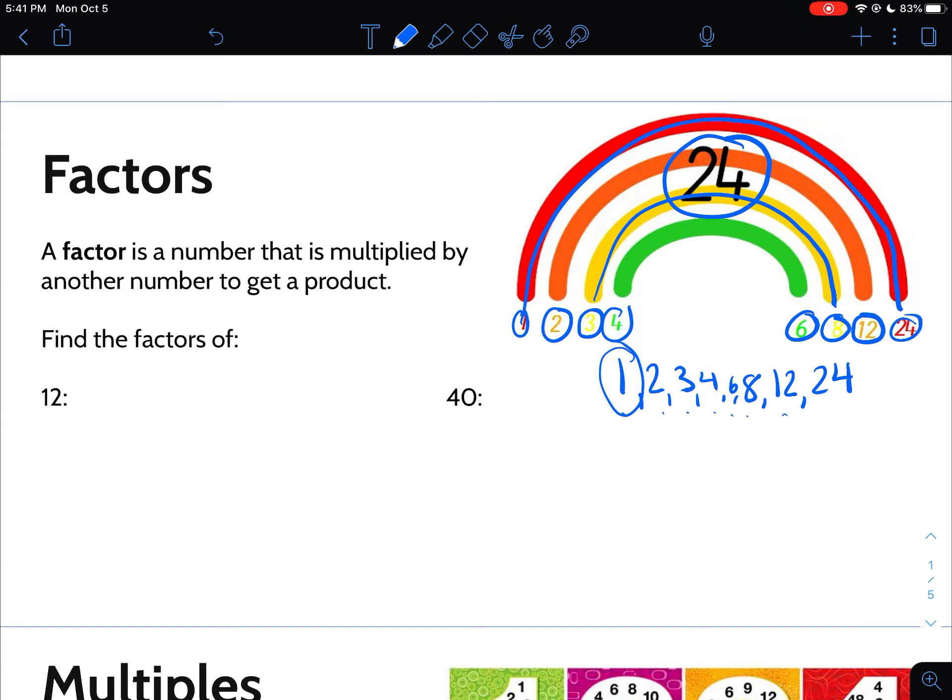We'll start by doing factors of 12. Like I said, one and itself are always going to be the factors. So one and 12 are both factors. I like to start at one and then just increasingly go up by one and try to figure out if that is a factor of it. So I would go from one to two. Two is a factor of 12 because two times six gets me 12. Move on to three. Three actually can be multiplied by four to get me 12. And there's nothing between three and four, so then I'm good. The factors of 12 are one, two, three, four, six, and 12.